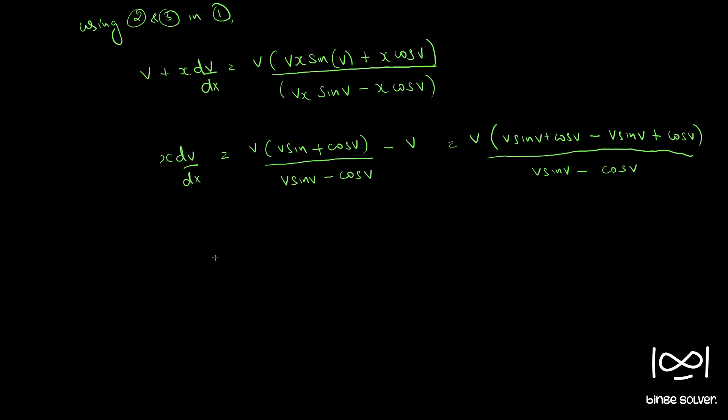Now, this equation can be solved using method of separation of variables. We will bring all the v terms to one side and x to the other. Here, v sin(v) get cancelled, so cos(v) cos(v) becomes 2 cos(v).